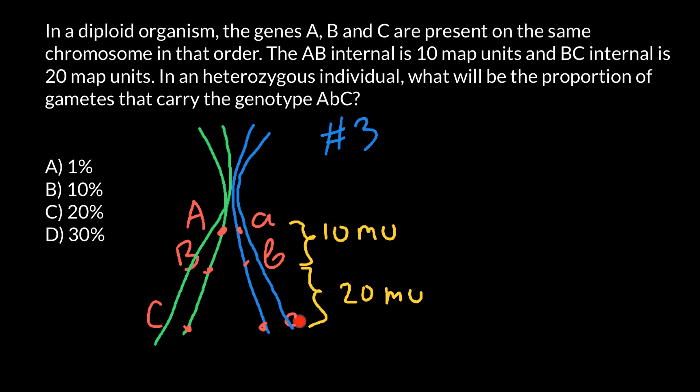So what these map units tell us? Basically, this number directly relates to the frequency of the crossing over between these two genes. For example, crossing over may happen here and also may happen here. But because the distance between genes B and C is twice bigger than between genes A and B, that gives opportunity for chromosomes to have more places where these two non-sister chromatids may cross over. So basically, this just gives us a frequency of the crossing over between two points.